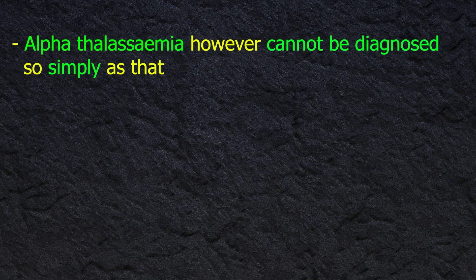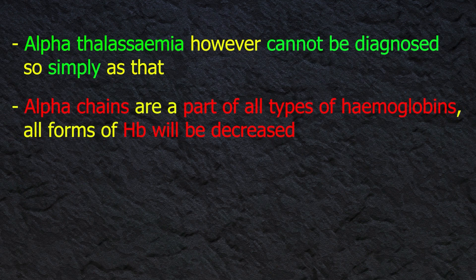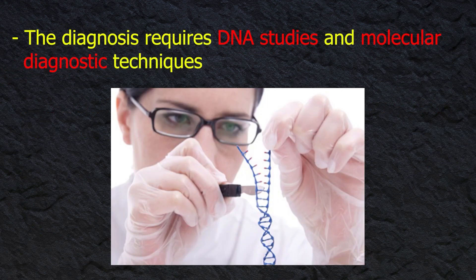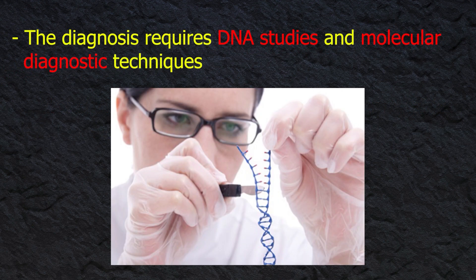Alpha thalassemia, however, cannot be diagnosed as simply, because alpha chains are part of all types of hemoglobin — all forms of hemoglobin will be decreased. The diagnosis therefore requires DNA studies and molecular diagnostic techniques.